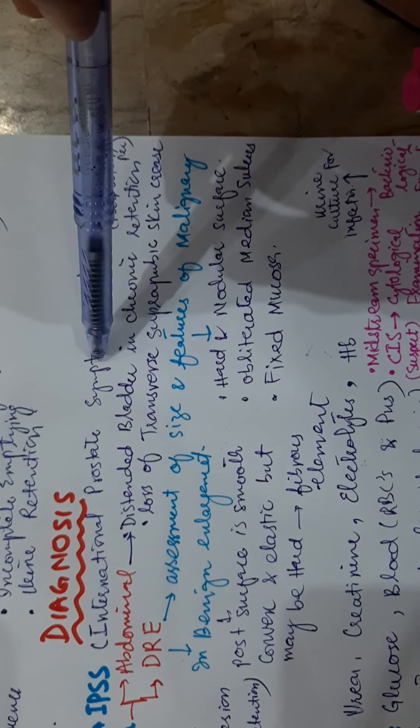Alpha blockers used are doxazosin, terazosin, and tamsulosin. These all relax the smooth muscle in the prostate and bladder neck, relieving the dynamic component of BPH that causes obstruction. These drugs act rapidly and are indicated in moderate-size prostate causing mild to moderate symptoms. The main side effect is postural hypotension, and these drugs should be administered at bedtime.